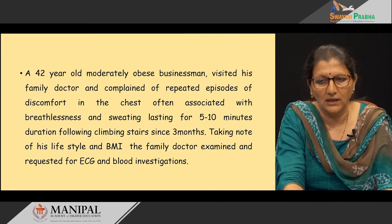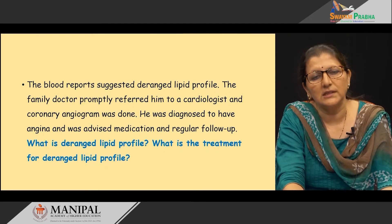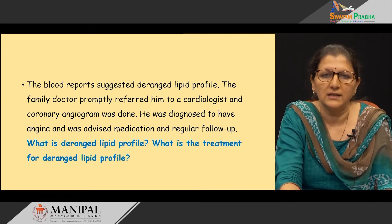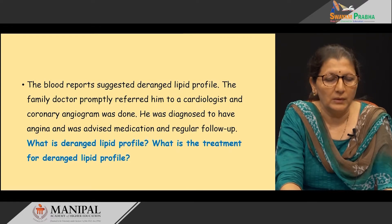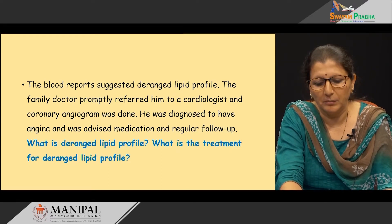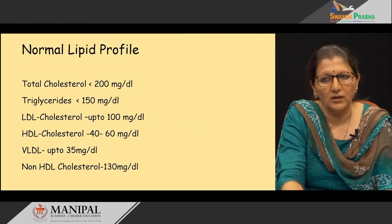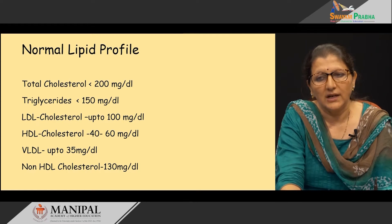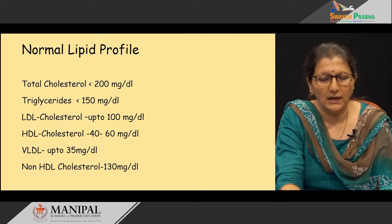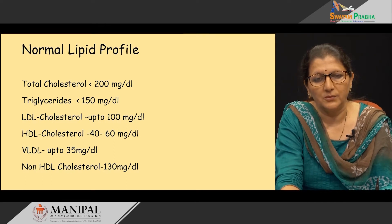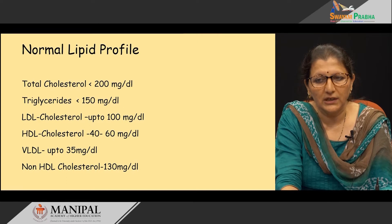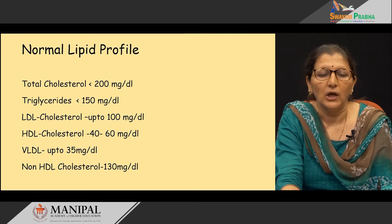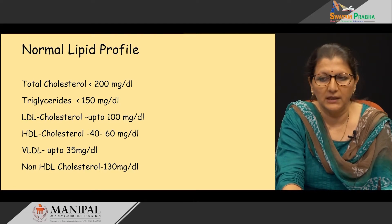Coming back to case scenario 1: what was the deranged lipid profile and what is the treatment? In a fasting normal lipid profile, total cholesterol should be less than 200 milligrams per deciliter, triglycerides less than 150 milligrams per deciliter, LDL cholesterol up to 100 milligrams per deciliter, HDL cholesterol 40 to 60 milligrams per deciliter, VLDL up to 35 milligrams per deciliter, and non-HDL cholesterol 130 milligrams per deciliter.